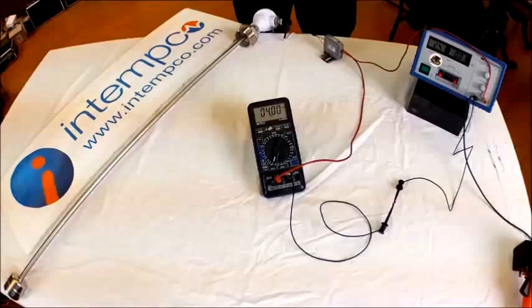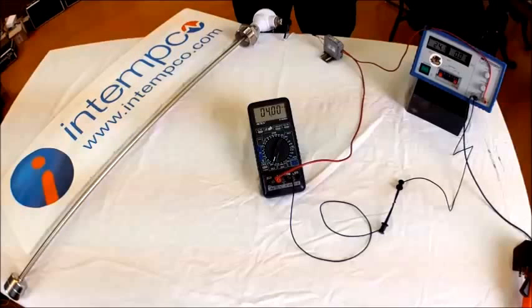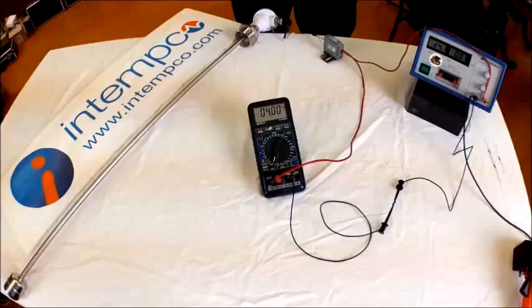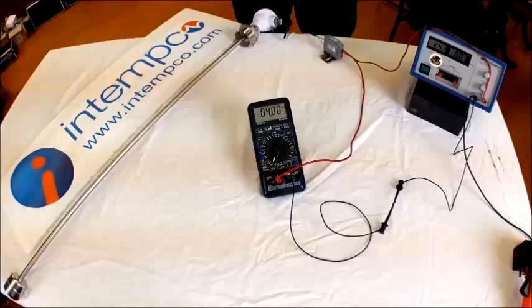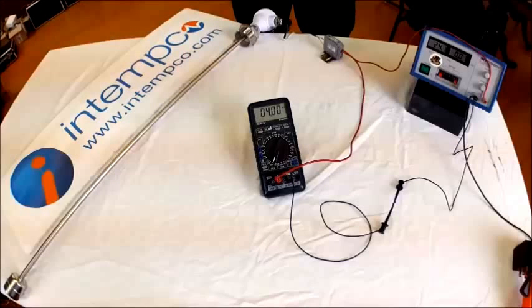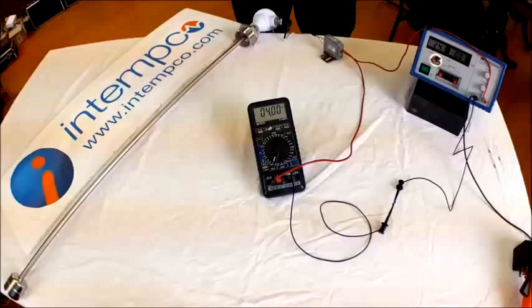4 to 20 milliamp current loops are quite common in industrial and sanitary control systems. They are very resistant to ESD and changes in voltage. Hopefully this demonstration will show you why.